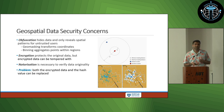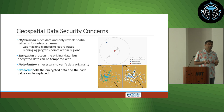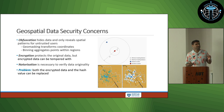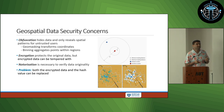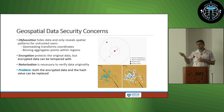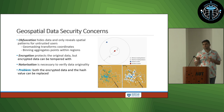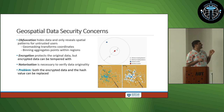Normally, if you want to obfuscate geospatial data, we can use geomasking. Geomasking basically shifts the original location to a random location, thereby providing an approximate location. For example, if you have seen news reports where they want to report crime locations, they will show an approximate location, not the original one.